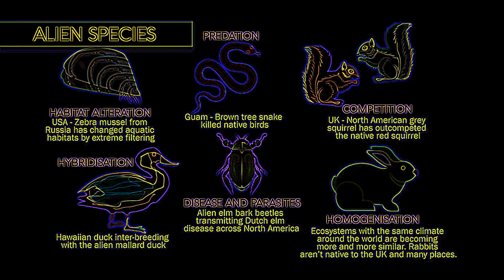A huge impact humans have had on planet Earth is the introduction of alien species to habitats. In fact, it is estimated that on any given day there are 3,000 species in transit aboard ocean-going vessels. Alien species can cause problems in a number of ways.